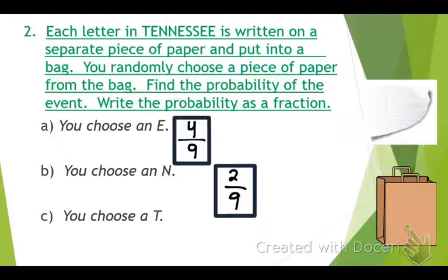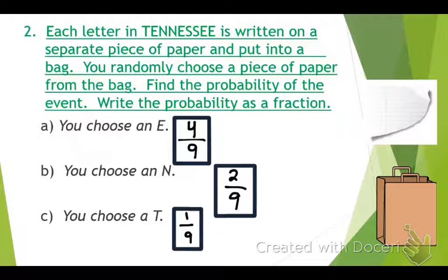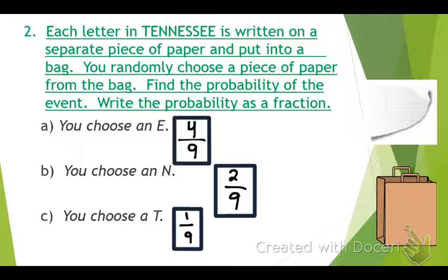What is the probability of choosing a T? One out of nine. Which one of these letters is most likely to be chosen? E, because there are four of them. Let's do this as an experiment. When she pulled that S out, the probability was two out of nine — it wasn't likely, but out of nine chances only two could have been that, and that's what she got.